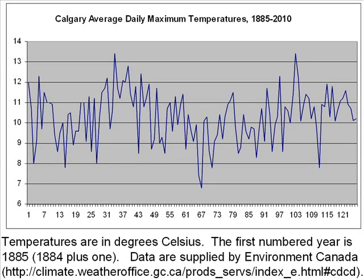This is a chart of Calgary's maximum temperatures. For each year in the chart, you're averaging out 365 daily high temperatures, and the scale on the left is in degrees Celsius, to get one number for the year.